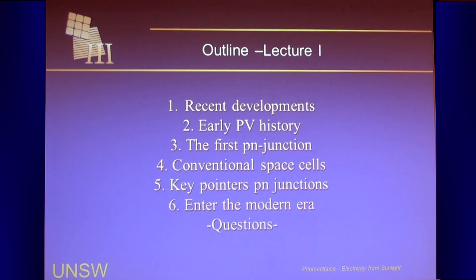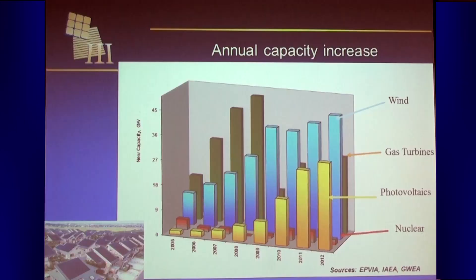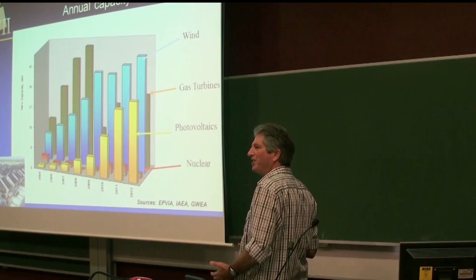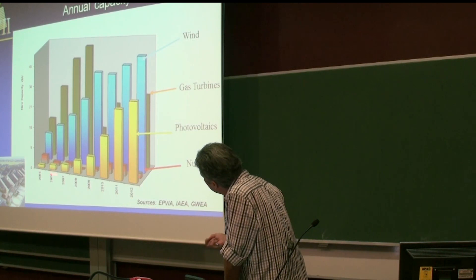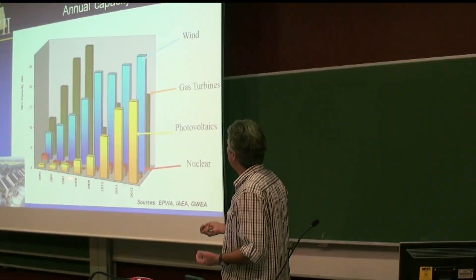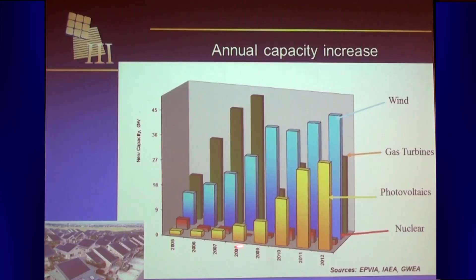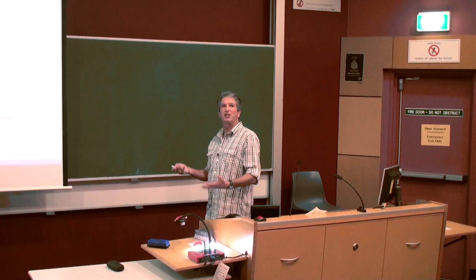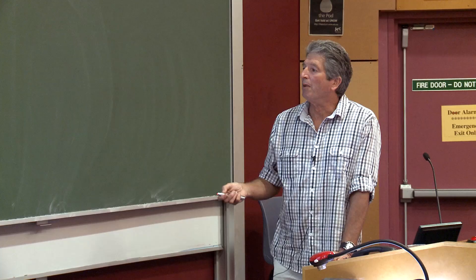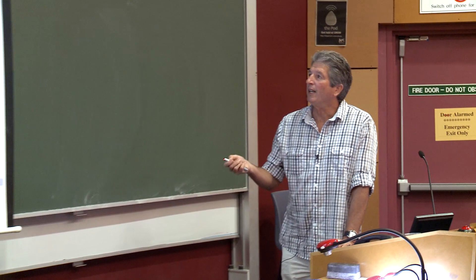I'd like to start off talking about recent developments and then get more into the nitty-gritty of how cells are designed. This shows the new electricity generation capacity installed worldwide in gigawatts — about 45 gigawatts. One gigawatt is a large coal or nuclear power station, so that's about 45 large power stations installed each year. Photovoltaics seven years ago was pretty small, but it's come from nowhere and is now one of the larger new low-carbon energy options being installed.